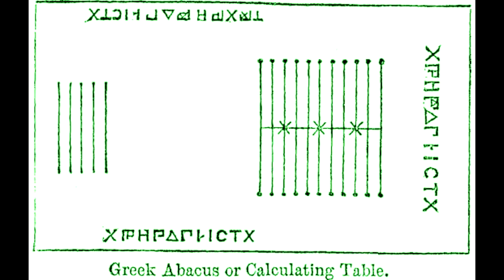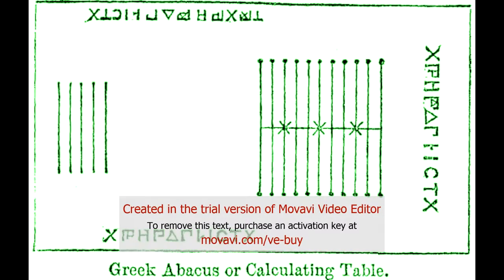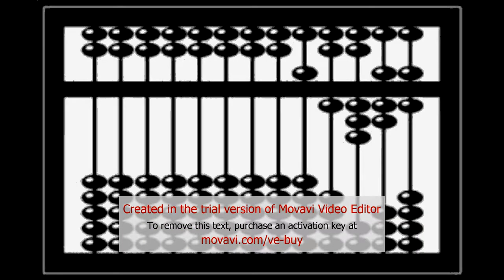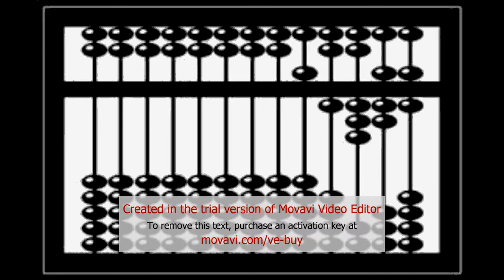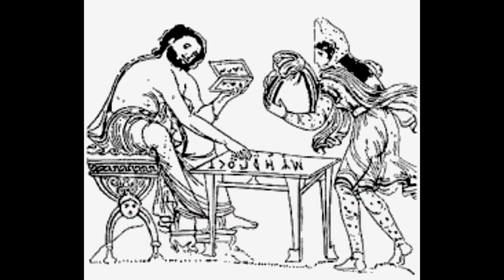The Greeks also used the abacus as far back as the 5th century BC. The Salamis tablet, discovered in 1846 AD, dates back to 300 BC. It is made of marble and had sets of parallel lines drawn into it. The tablet was used for calculations that were too difficult to do in your head.